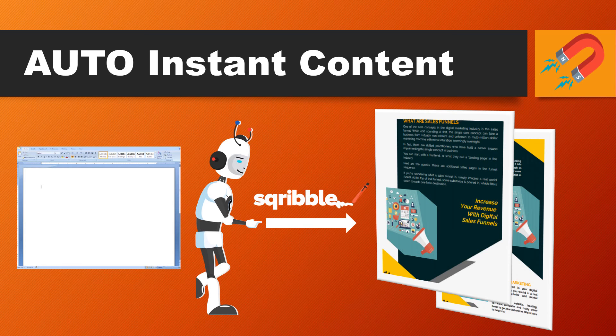This is a massive feature of Scribble. Scribble will allow you to populate your entire e-book with automatic instant content. This is the big one. They've got an incredible content engine — with just a few clicks it's going to fill out your entire e-book.